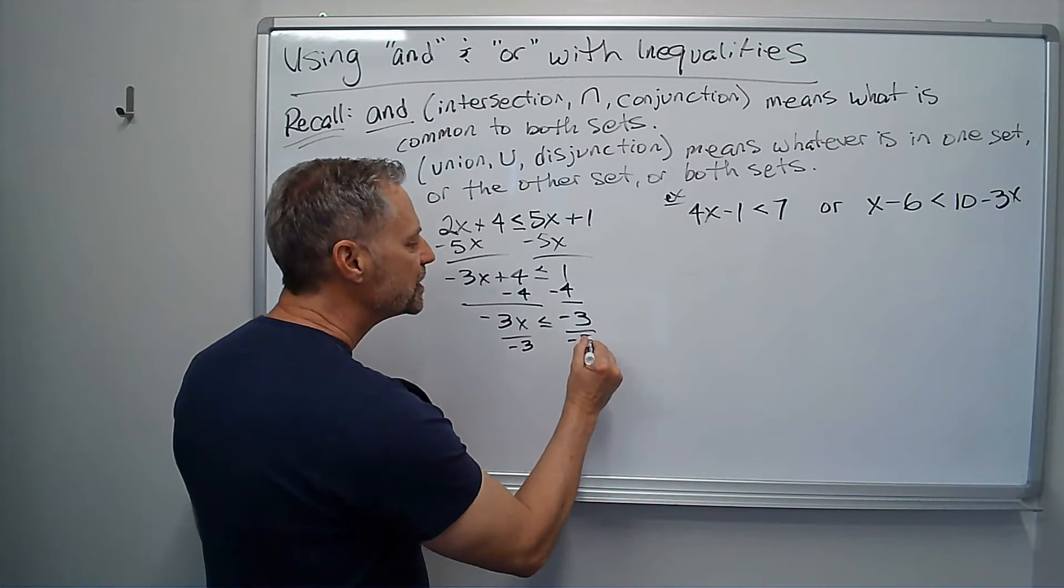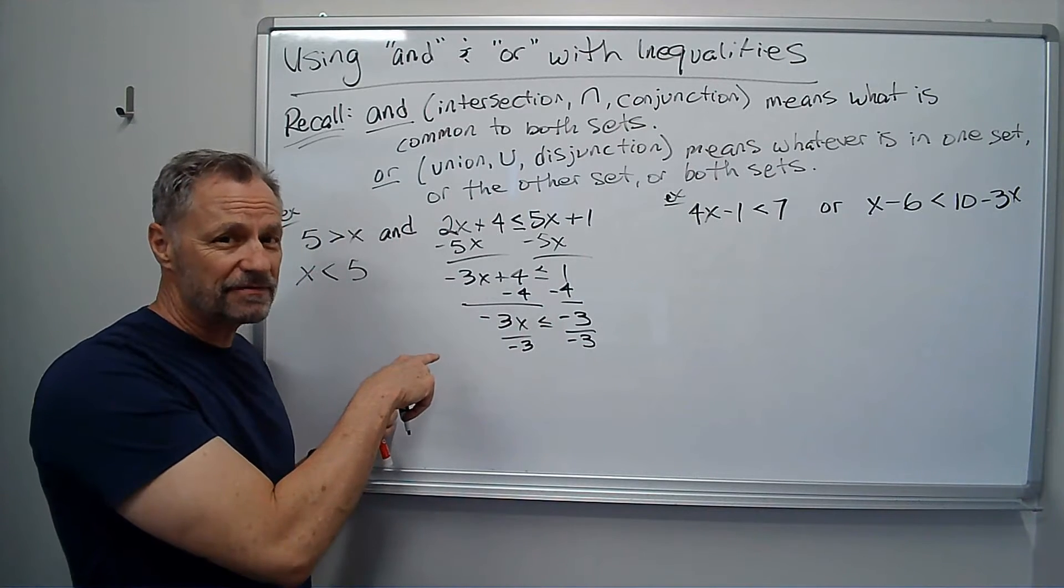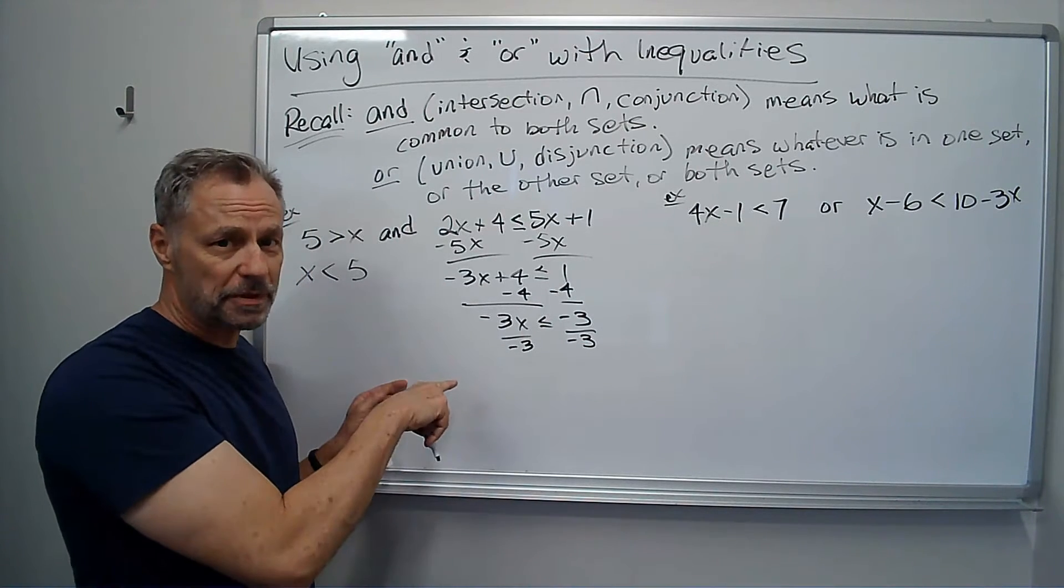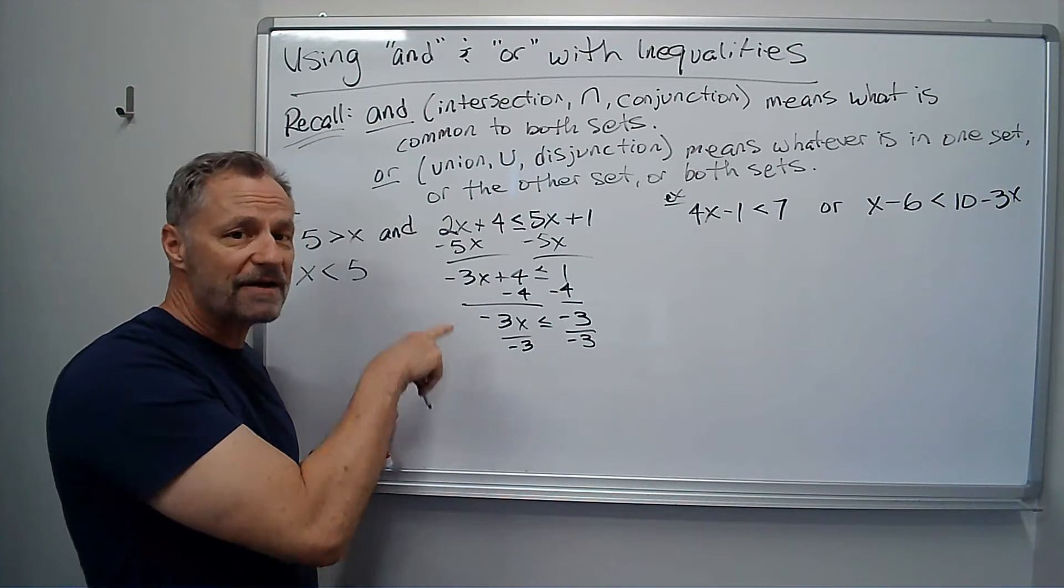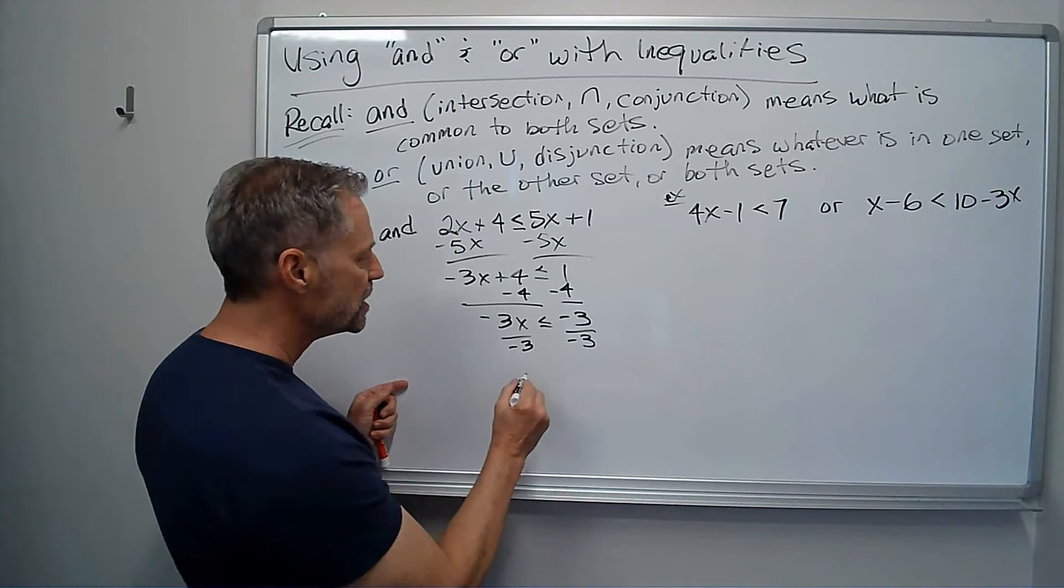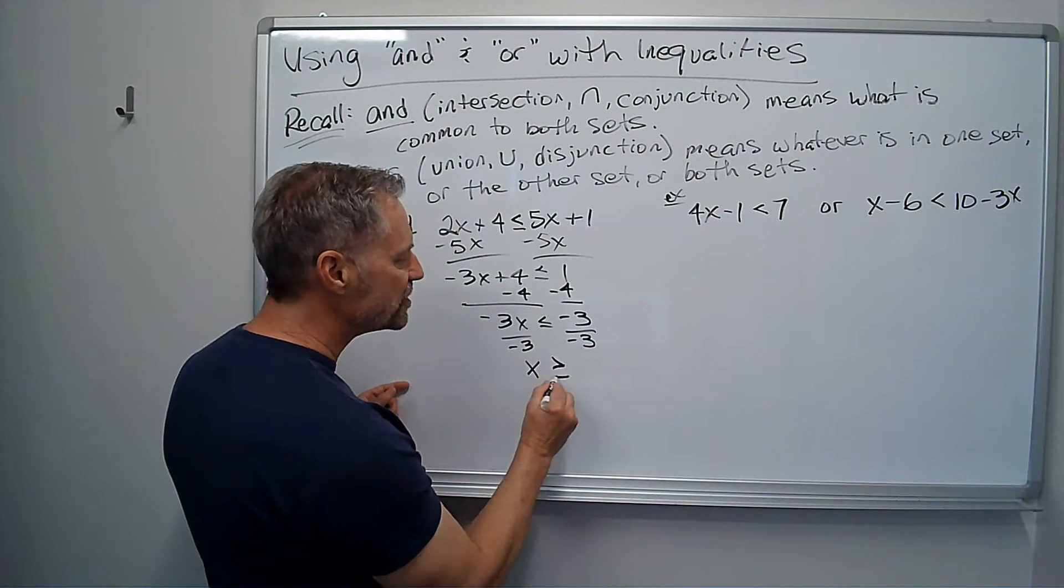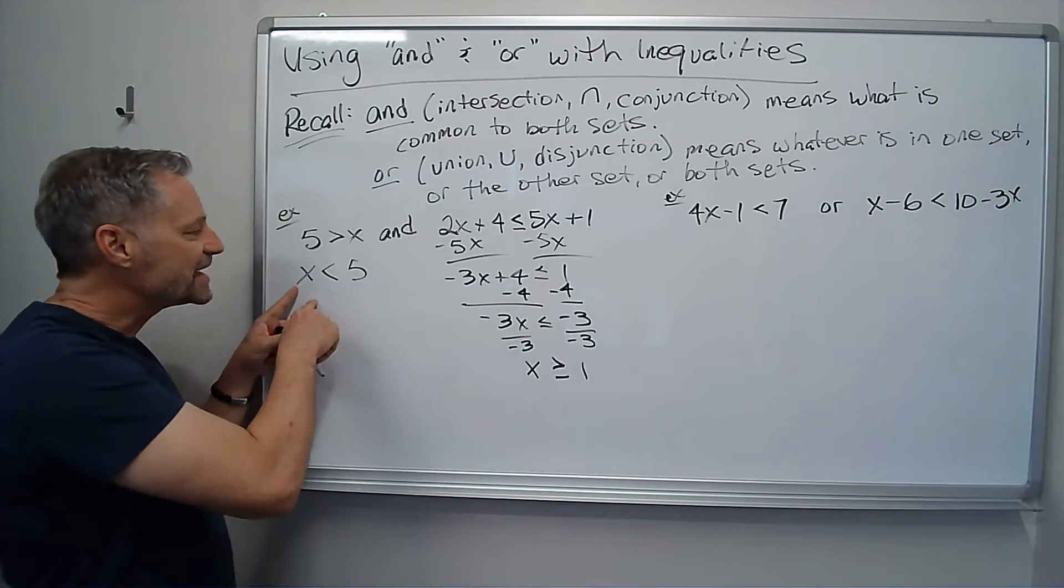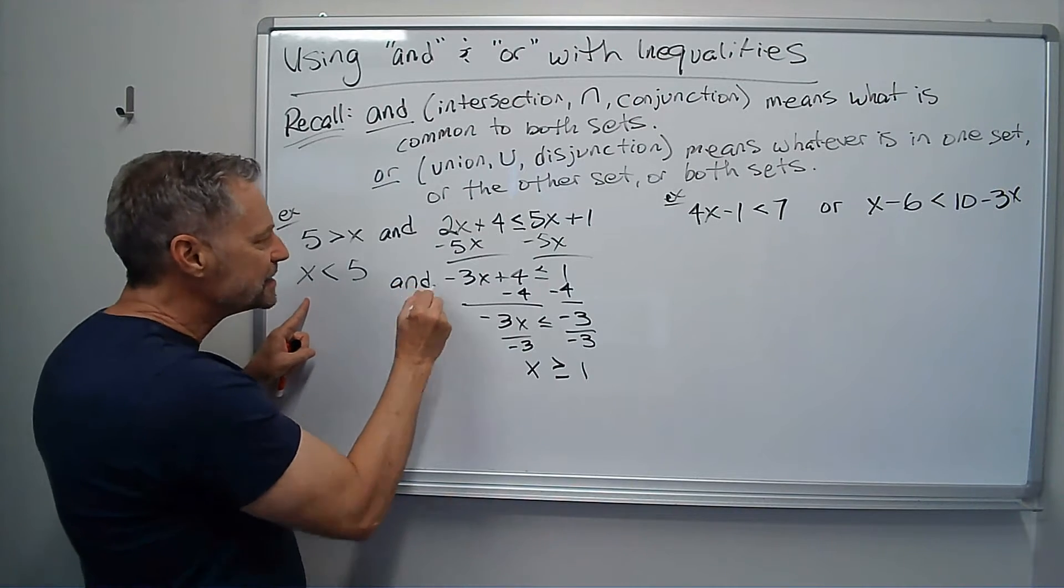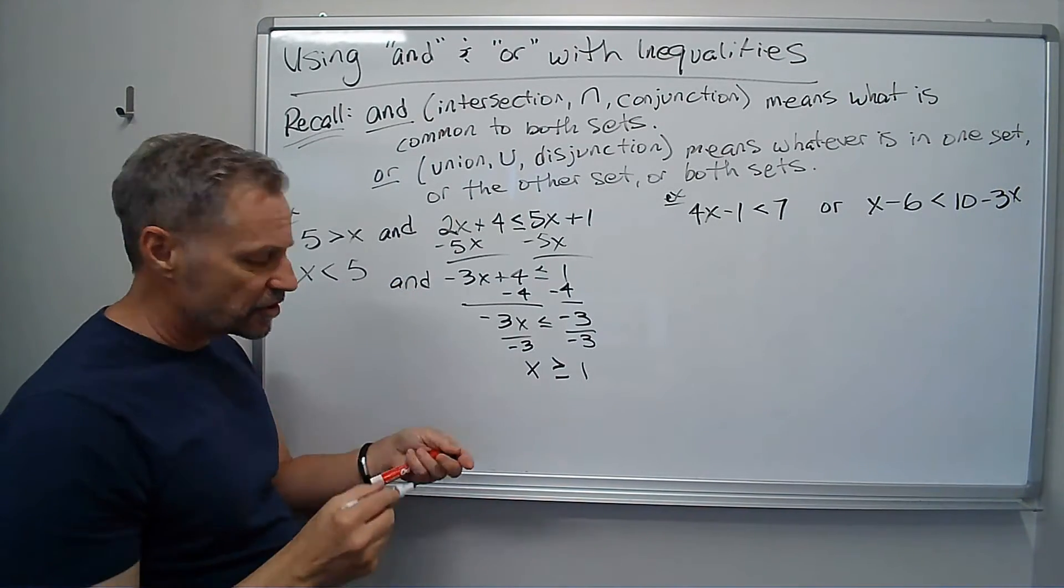Remember, with inequalities, whenever you divide by a negative number on both sides, or multiply both sides by a negative number, you have to flip the direction of the inequality. So this becomes x is greater than or equal to 1. So I have x is less than 5 and x is greater than or equal to 1.